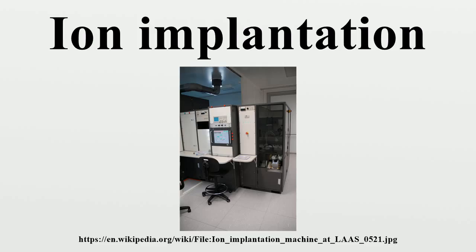This causes a structural change, in that the crystal structure of the target can be damaged or even destroyed by the energetic collision cascades. Because the ions have masses comparable to those of the target atoms, they knock the target atoms out of place more than electron beams do. If the ion energy is sufficiently high to overcome the Coulomb barrier, there can even be a small amount of nuclear transmutation.